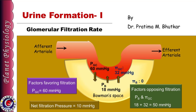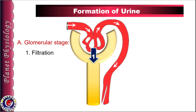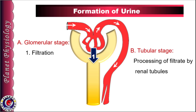Today we shall learn about the details of the first step in urine formation, i.e. glomerular filtration rate, abbreviated as GFR. Urine formation involves two stages. First is the glomerular stage, where plasma is filtered by the glomerular membrane, hence called glomerular filtration. The second stage is the tubular stage, where this filtrate is processed in various segments of tubules to form urine.